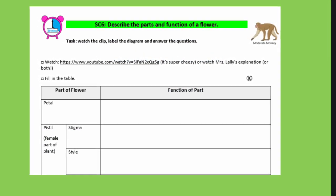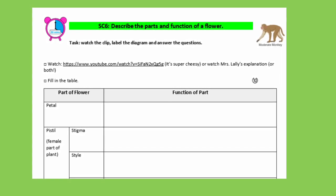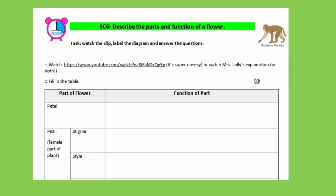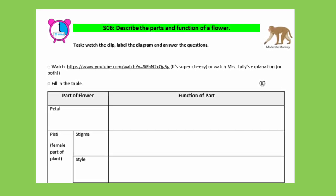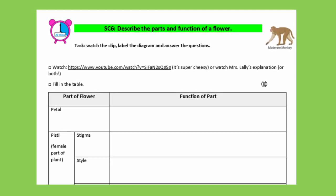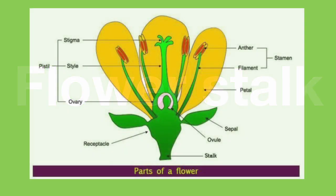Our last thing to cover is the parts of the flower that are neither male nor female, just like the petals. We're going to start with the flower stalk. The flower stalk is as simple as it sounds — it's just the stalk that the flower grows from.